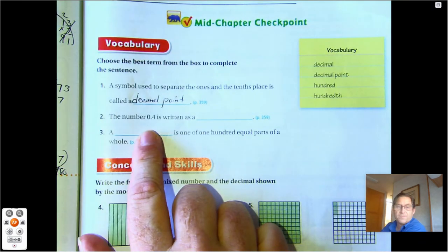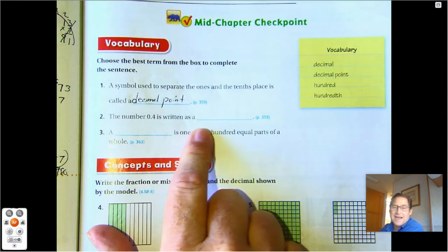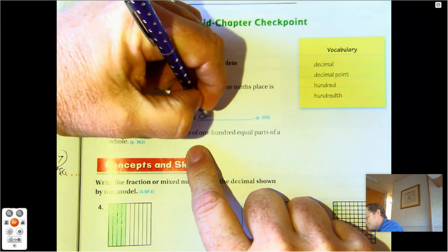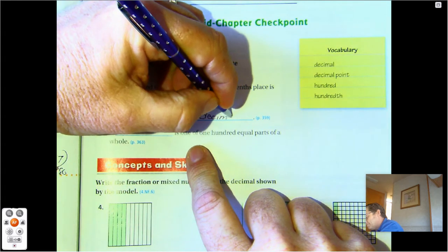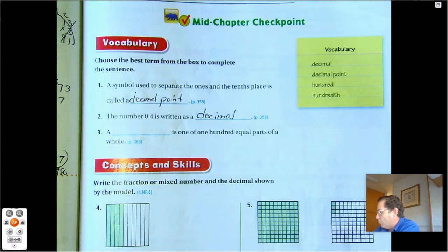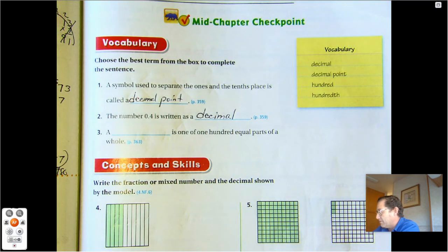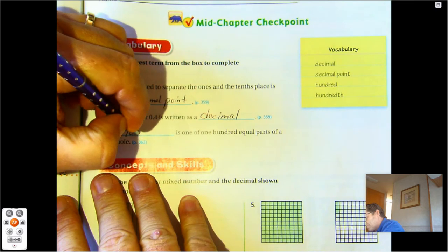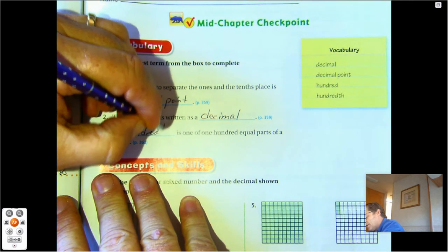The number four tenths is written as a decimal. A blank is one of one hundred equal parts of a whole. That would be hundredths.